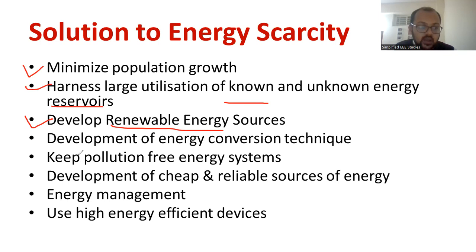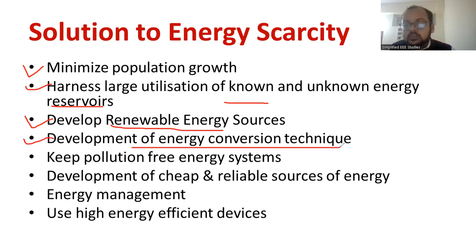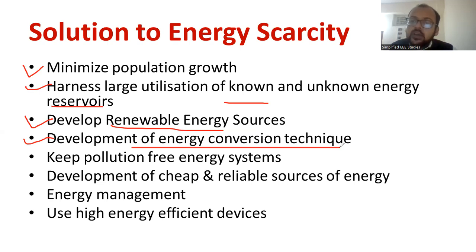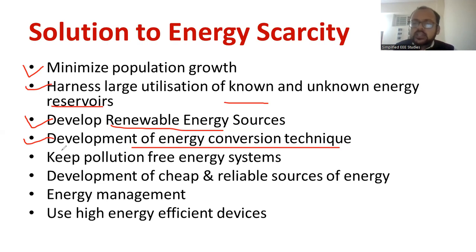Develop energy conversion and conservation techniques — try to conserve energy. For example, if you are producing 1 kWh of energy, 0.5 kWh may be wasted due to transmission and distribution (T&D) losses. So instead of producing more energy, we should prevent wastage — that is the best solution.